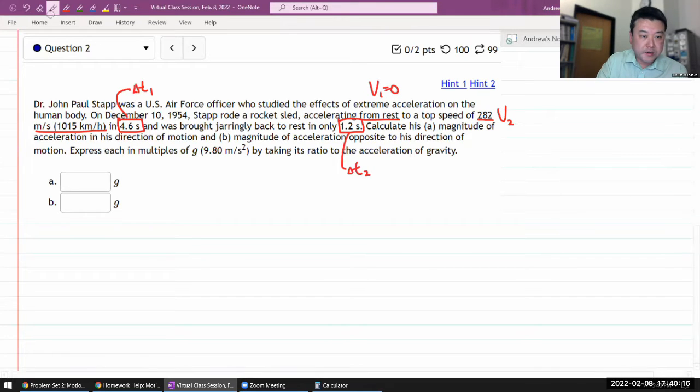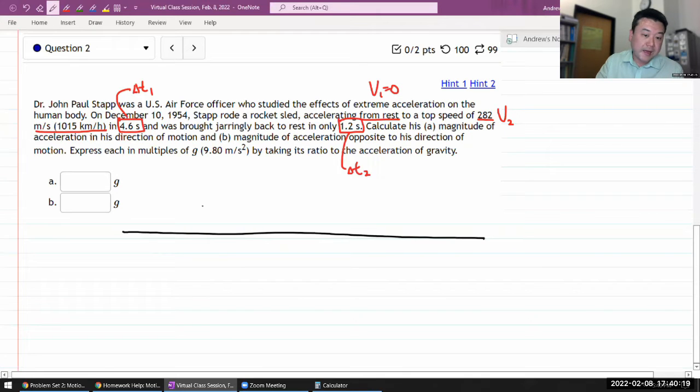Calculate his magnitude of acceleration in each direction of motion. Okay, so the picture here is you have something that's moving in a line. So it's a one-dimensional motion. Imagine a cart, so at time equals zero it's at v1 of zero.